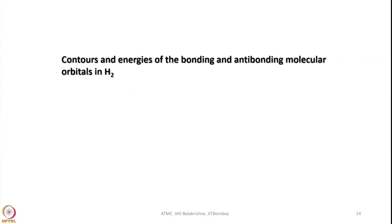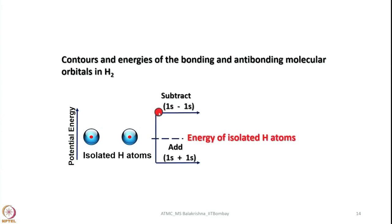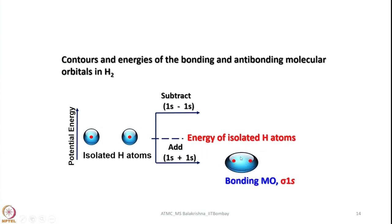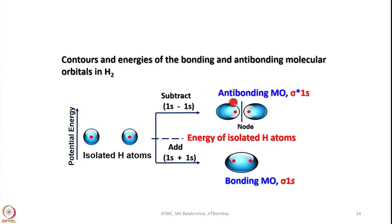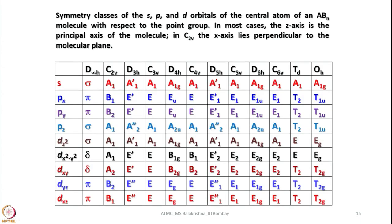The contours and energies of the bonding and antibonding molecular orbitals in H₂ are as follows. Consider two isolated hydrogen atoms each having one electron in their 1s orbitals; when they interact, two levels are generated — one from subtraction and one from addition. The bonding molecular orbital is called σ1s, where electron density resides between the two nuclei, and the antibonding orbital is called σ*1s — all antibonding orbitals are given a superscript star. A node is generated in the antibonding case. This is very important: the symmetry classes of S, P, and D orbitals of the central atom of an ABₙ molecule with respect to the point group — in most cases the z axis is the principal axis of the molecule.